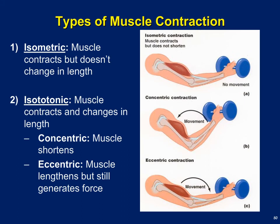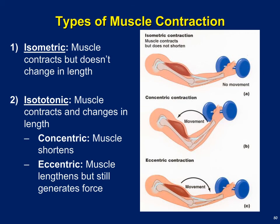An isotonic contraction is one where the muscle contracts and changes in length, divided into either concentric or eccentric contraction. A concentric contraction is when the biceps brachii contracts and the force of contraction is greater than the force of the weight, causing the elbow to flex and the dumbbell to move closer. An eccentric contraction is one where we're still forming cross bridges and the muscle is still contracting, but the force of that contraction is not as great as the force of the weight — for example, if extending the elbow and moving the dumbbell away in a controlled manner.